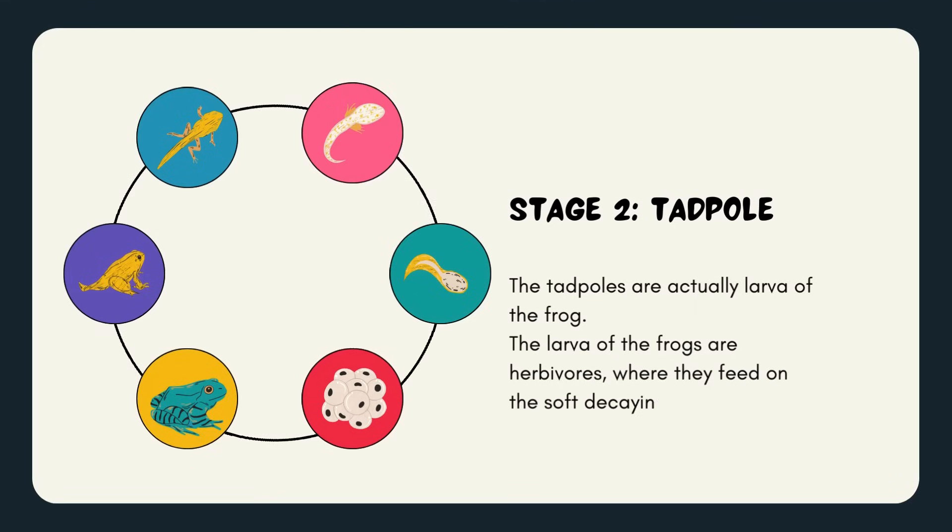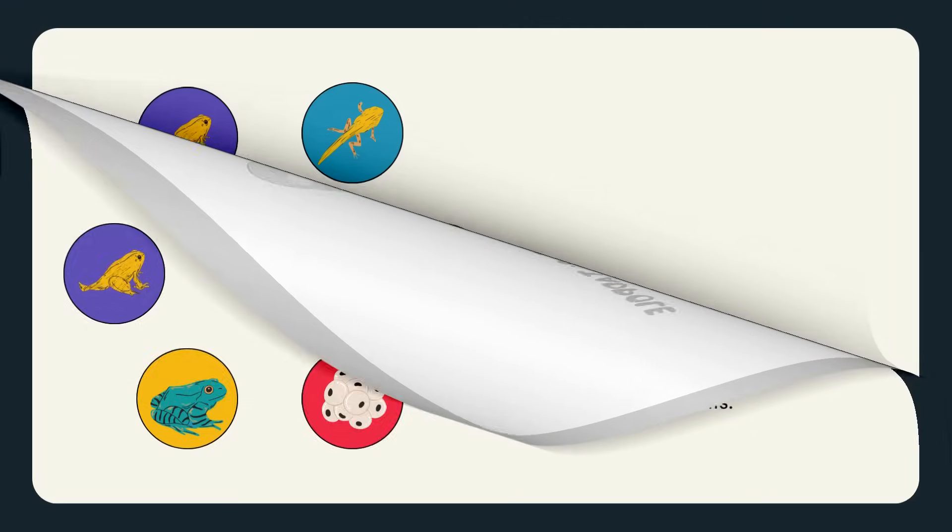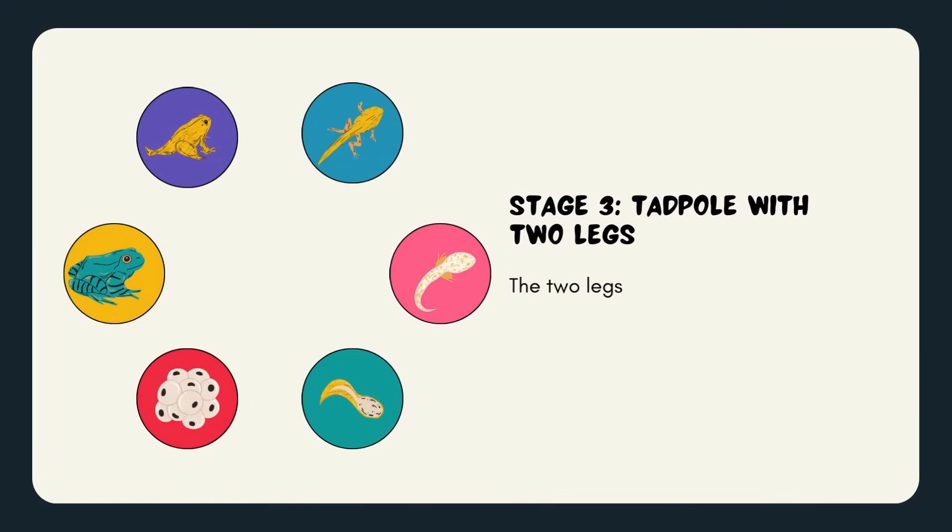Stage 3: Tadpole with two legs. The two legs of tadpoles larva grows and its long tail becomes shorter day by day.